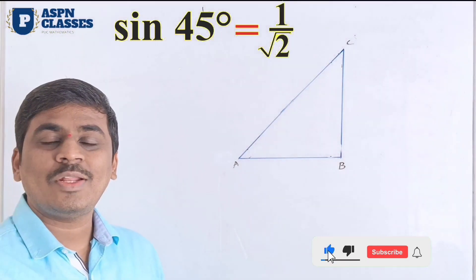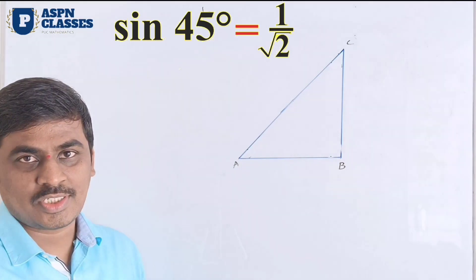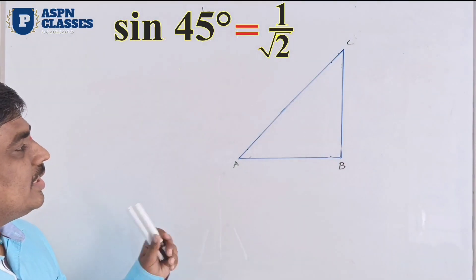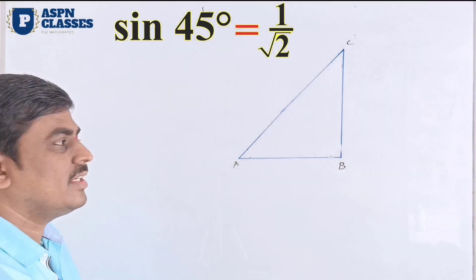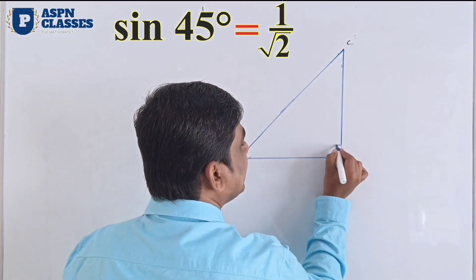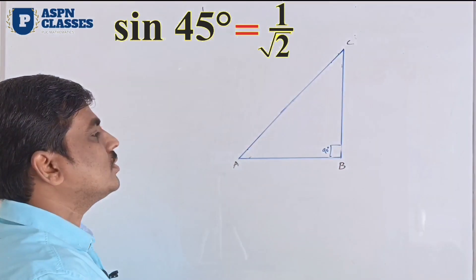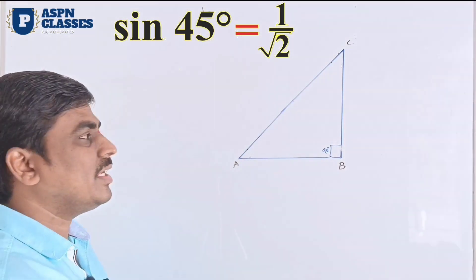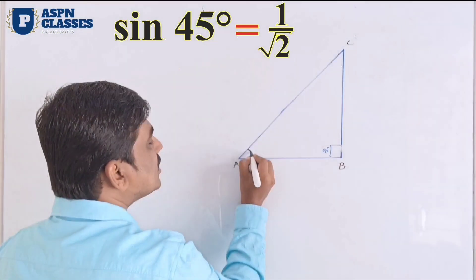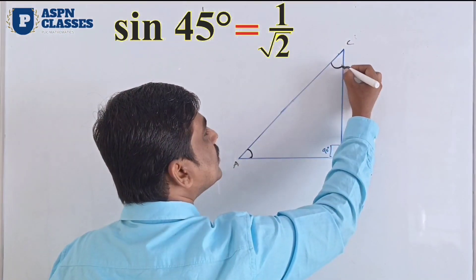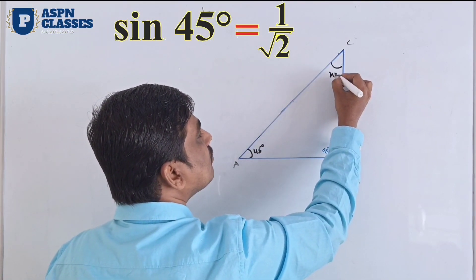Sin(45°) = 1/√2. We use 1/√2. This is a right isosceles triangle where both equal sides give a 90-degree angle. So 1/√2 — this side equals BC and AB. This is a right isosceles triangle. If the two equal sides are a, then we use both sides equal to a, and the angle is 45 degrees.